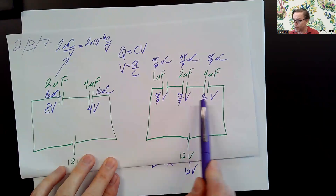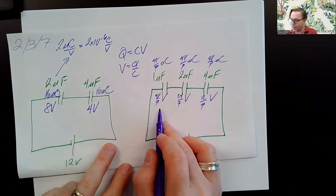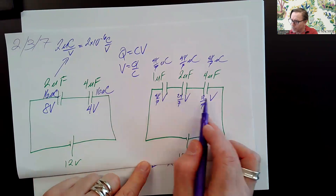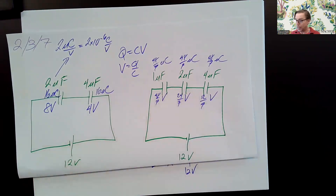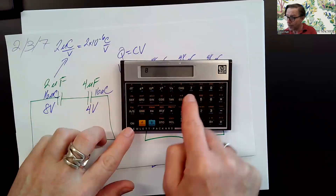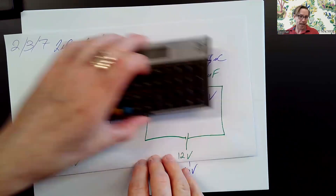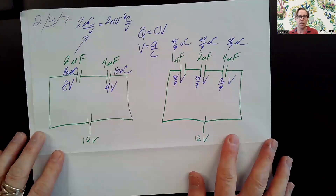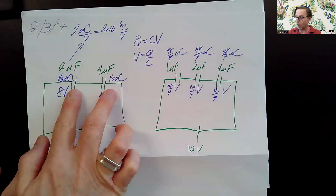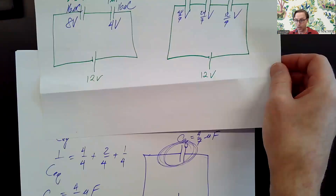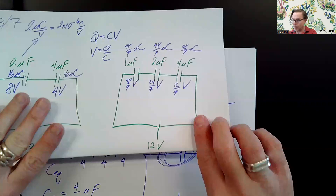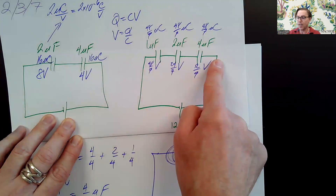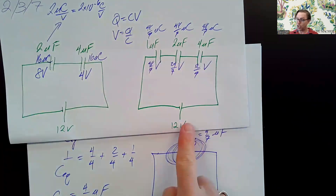Do these three potential differences add up to 12 volts? Is 48 sevenths plus 24 sevenths plus 12 sevenths equal to 12? That's 84 over 7, and 84 divided by 7 is indeed 12. So I go up 12 volts and I go down a total of 12 volts. That is how we approach capacitors in series: redraw the picture so that the capacitors in series are replaced by a single capacitor, find the charge on it, assign that charge to each capacitor in the series, then use Q equals CV to find other information, and check.